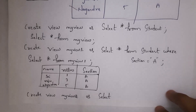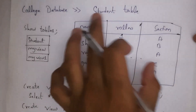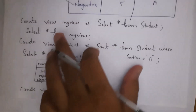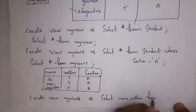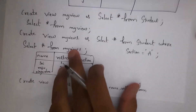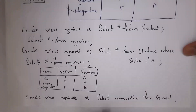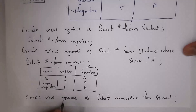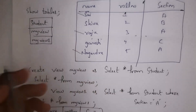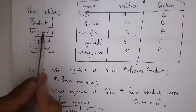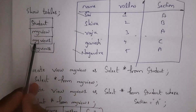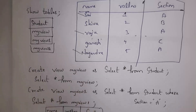I don't want to select all columns. I want to select only the name column and roll number column. So write: SELECT name, roll_number FROM student. Whenever you write this code and click enter it will create a view named 'my_view_2'. When you write SHOW TABLES it will display four tables: student, my_view, my_view_1, and my_view_2.